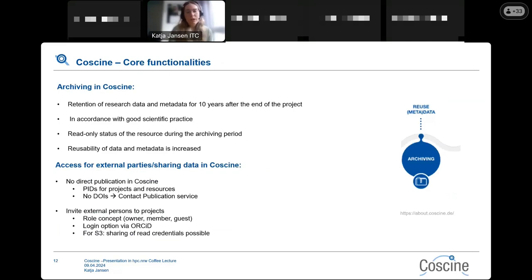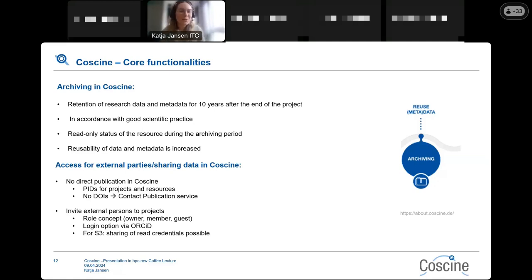After your project ends, there is a possibility to archive your data in CoSINE in accordance with good scientific practice. From that point on, your data will be in a read-only status during the archiving period, and the reusability of both data and metadata is increased per the FAIR principles. CoSINE is not a publication service — you cannot do direct publication in CoSINE. We have handle PIDs for projects and resources but no DOIs, so if you want to publish your data you should contact your publication service.